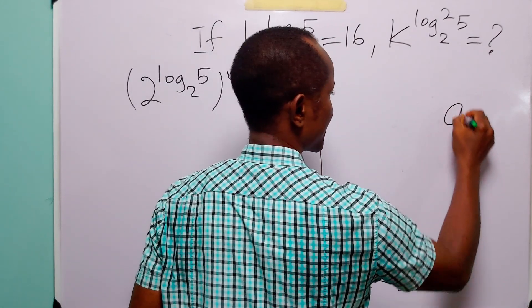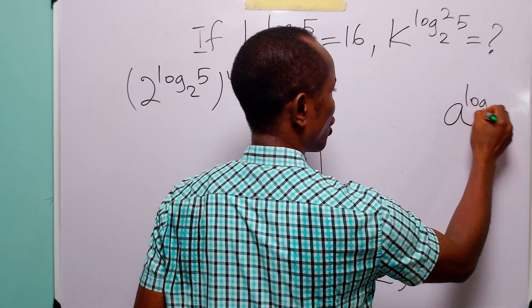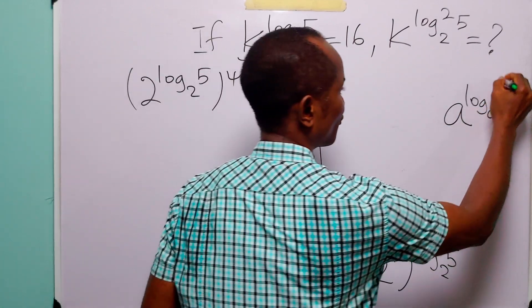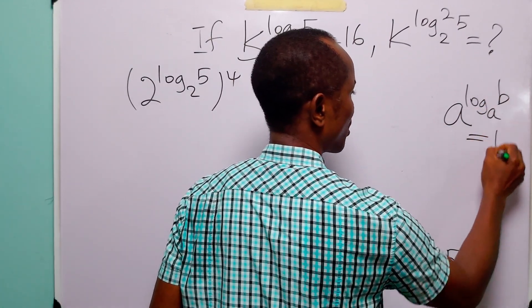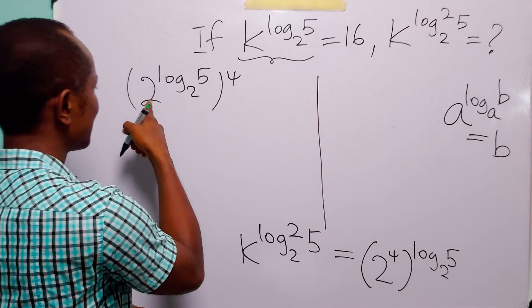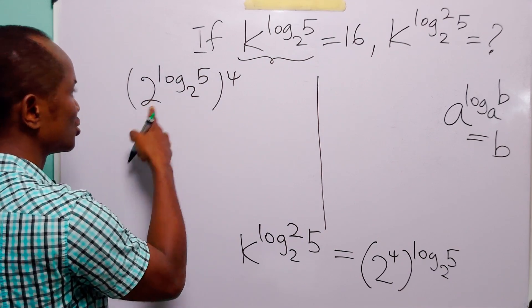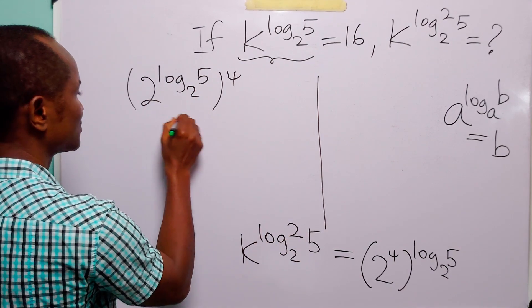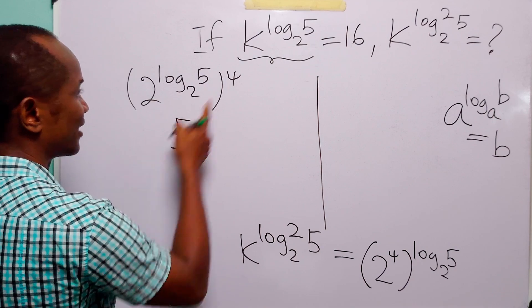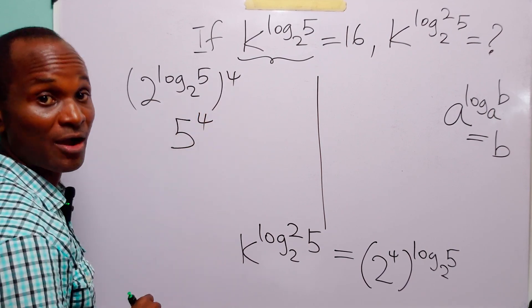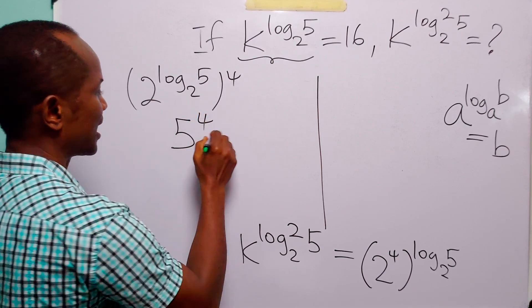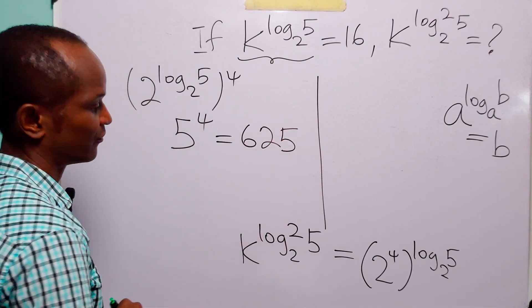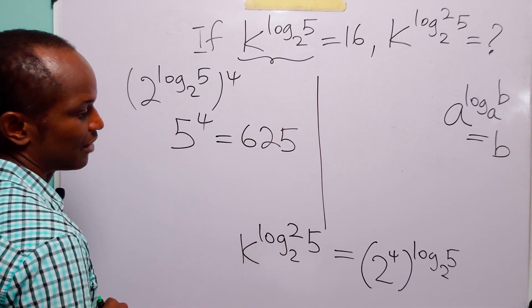Remember that a to the power logₐ(b) is simply equal to b. Here we have 2 to the power log₂(5), so this is simply equal to 5, raised to the power 4, which equals 625.